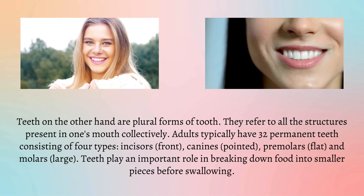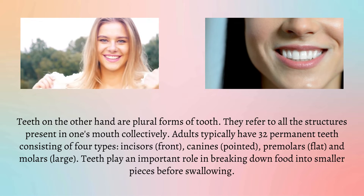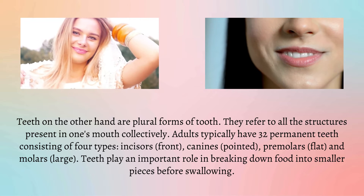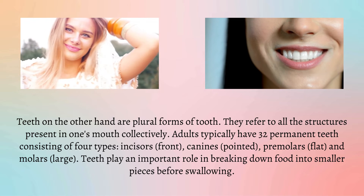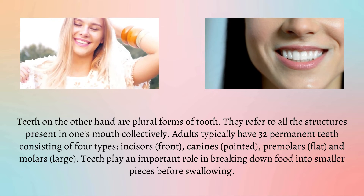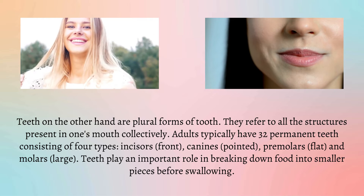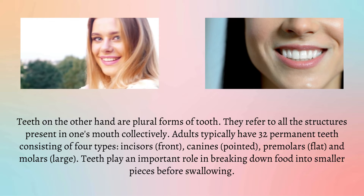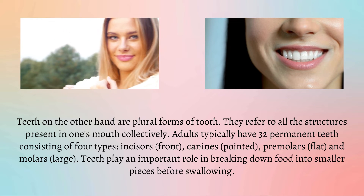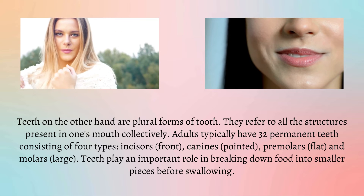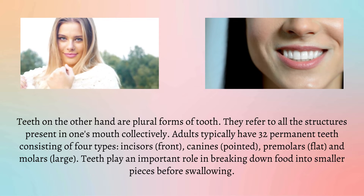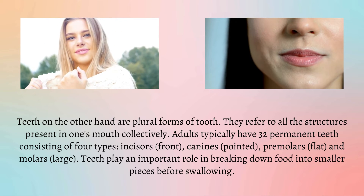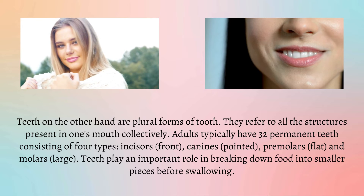Teeth, on the other hand, are the plural form of tooth. They refer to all the structures present in one's mouth collectively. Adults typically have 32 permanent teeth consisting of four types: incisors (front), canines (pointed), premolars (flat), and molars (large).